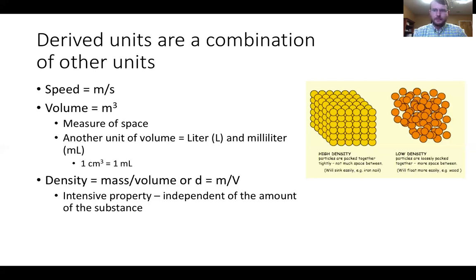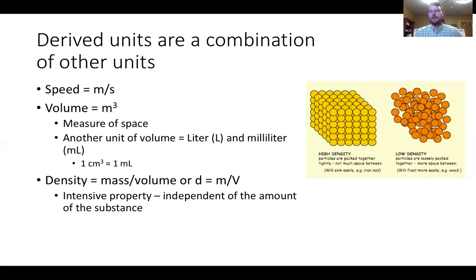If we look at an aluminum can and a platinum ring—if I had three platinum rings and five aluminum cans, the mass has changed, because mass is an extensive property depending on the amount. But whether I have one platinum ring or three, or one aluminum can or five, the density of aluminum (2.7) and the density of platinum (21.4) do not change regardless of how much I have.